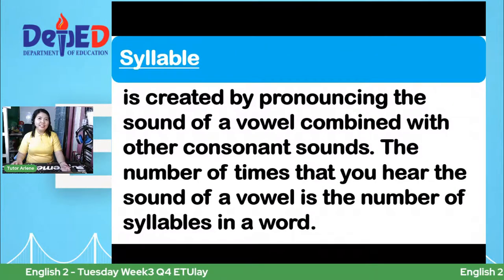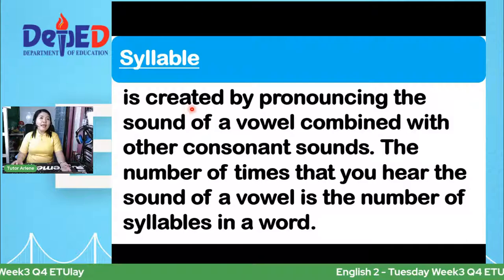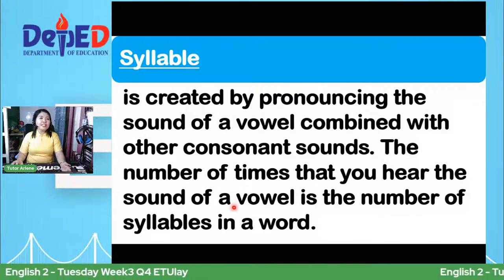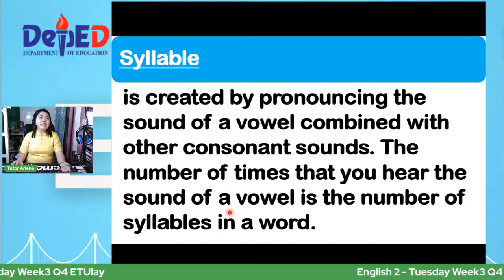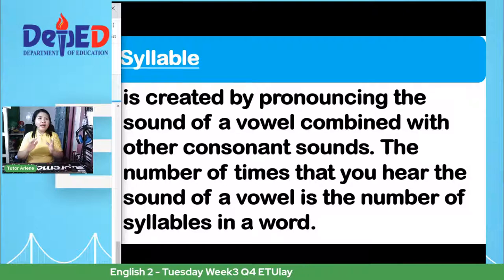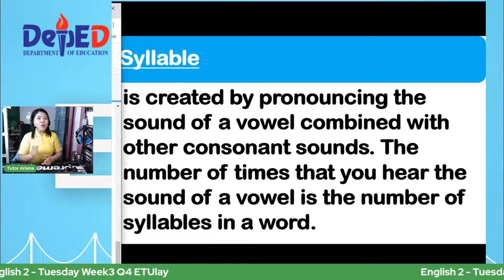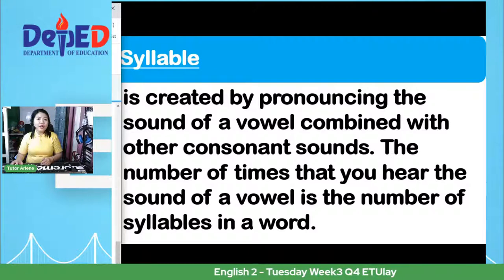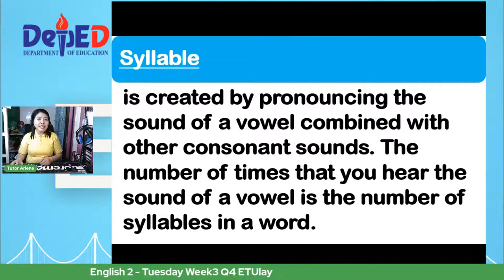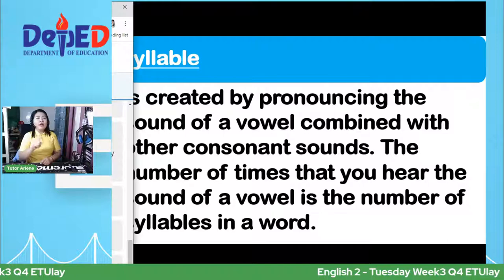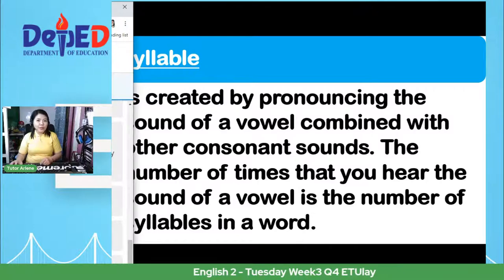So first, what is a syllable? A syllable is created by pronouncing the sound of a vowel combined with other consonant sounds. The number of times that you hear the sound of a vowel is the number of syllables in a word. Kung ilan yung vowel sound in a word, so that will be the number of syllables. Syllables are made of one, two, three, or four letters.